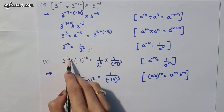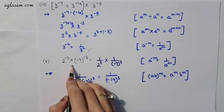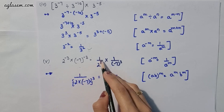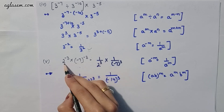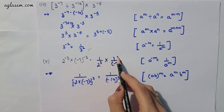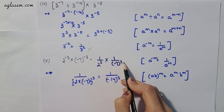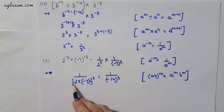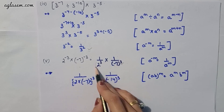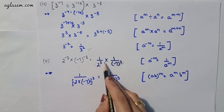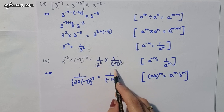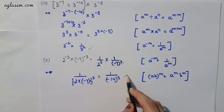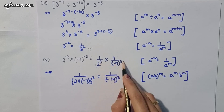Moving to the fifth part: 2^(-3) × (-7)^(-3). Applying the formula a^(-m) = 1/a^m, we get 1/2^3 × 1/(-7)^3. Taking these together, the answer is 1 / (-14)^3, since 2 and 7 are taken as a common base product of 14.